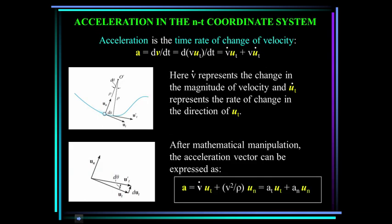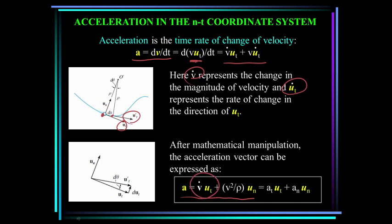Now let's look at acceleration. Acceleration is the time rate of change of velocity. Since velocity is the speed in the tangential direction, taking the derivative with respect to time gives: v-dot is the change in the magnitude of the velocity, and u-sub-t-dot represents the rate of change in the direction of u-sub-t. After some mathematical manipulation, the acceleration vector is: the tangential acceleration is v-dot (the rate of change of velocity, tangent to the curve), and the normal acceleration is v-squared divided by rho. We can rewrite it as a-sub-t in the u-t direction and a-sub-n in the u-n direction.